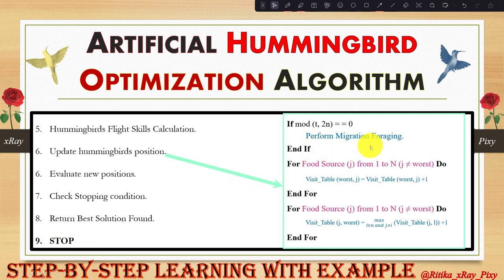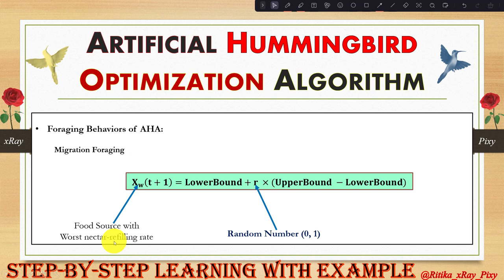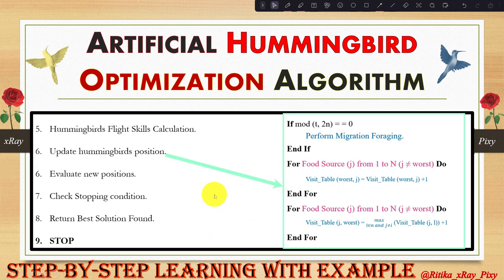Migration foraging is calculated using a dedicated equation. Due to lack of food in a particular area, hummingbirds migrate from the worst nectar refilling rate to a new one produced randomly, using random number r. The visit table is then updated after migration foraging.